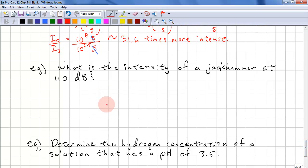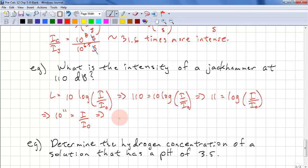Let's look at a sound problem. What is the intensity of a jackhammer at 110 decibels? Again start off with the formula. Substitute the value. We have 110 equals 10 times log I over I0. Simplify. We get 11 equals log I over I0. And now we exponentiate both sides with a base of 10. So we have I equals 10 to the power of 11 I0.